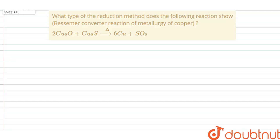Hello, welcome to Doubtnut. So we have a question here. The question says: what type of reduction method does the following reaction show? We have been given a reaction — the Bessemer converter reaction of metallurgy of copper — where copper oxide and copper sulphide are being heated, and pure copper metal and sulphur dioxide are given as products.